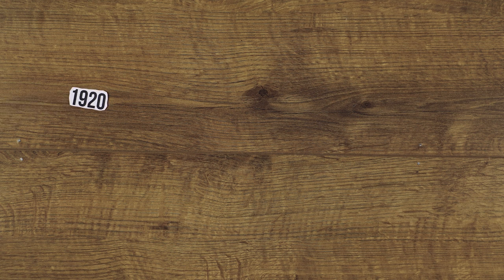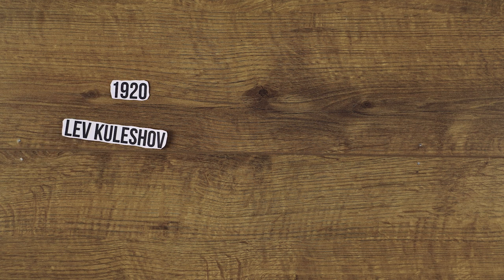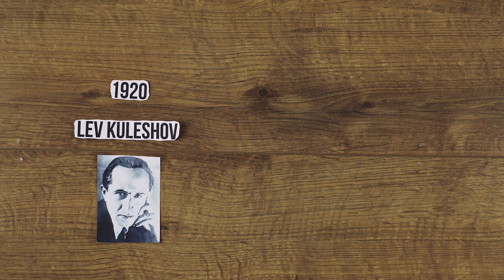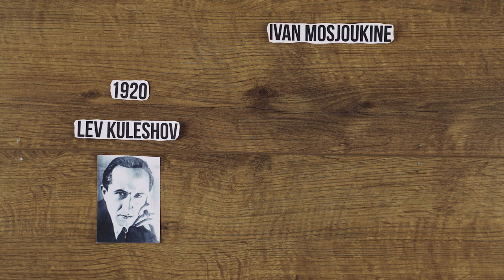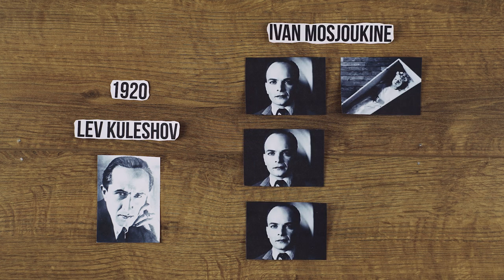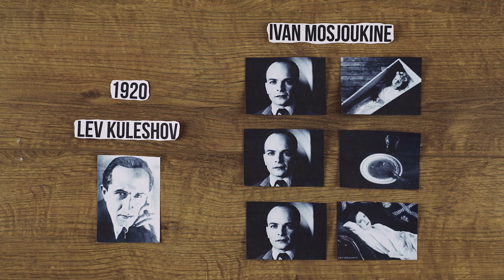We're going to start off with a little bit of a history lesson. In 1920 a filmmaker called Lev Kuleshov performed an experiment to demonstrate that, depending on how your shots are assembled, the audience will attach different meaning and emotion to them. Kuleshov cut three different sequences together.